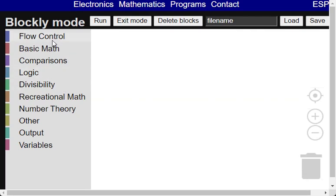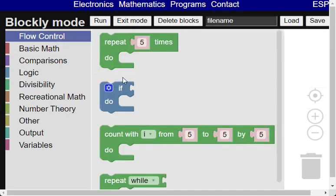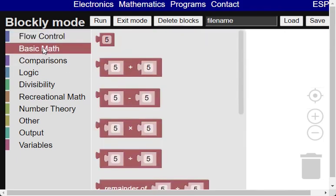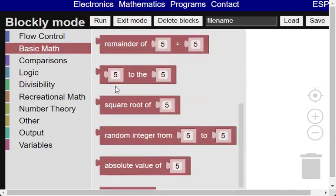At the left you can see the toolbox with different categories of blocks: flow control to implement loops and conditional execution, basic math that includes the numbers, basic operations, integer square root, and random numbers.